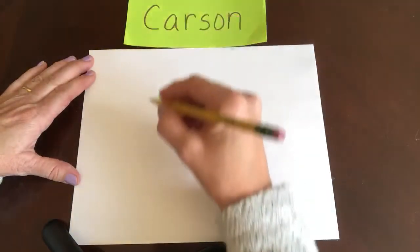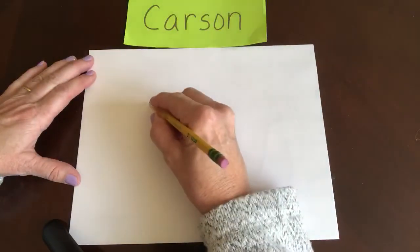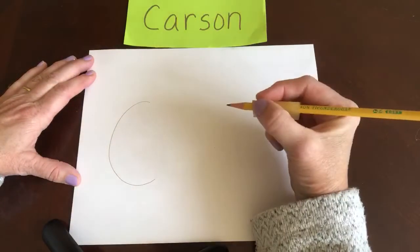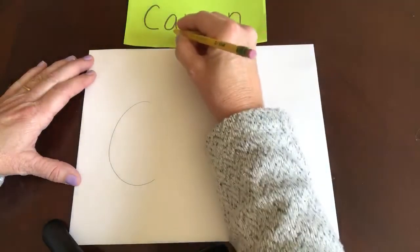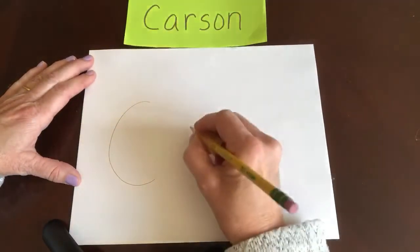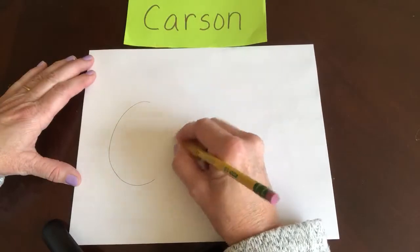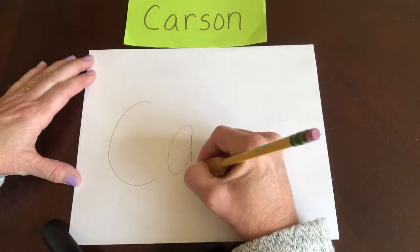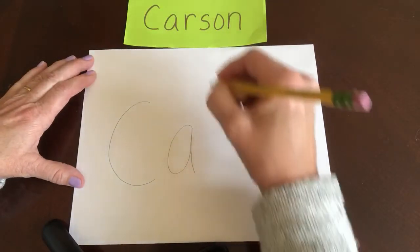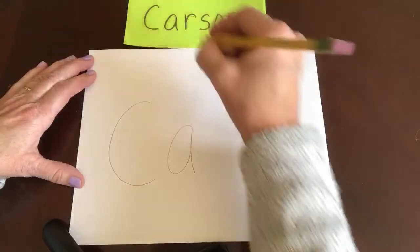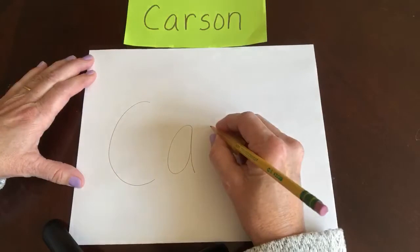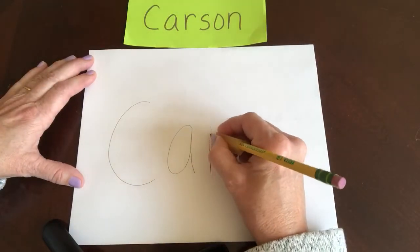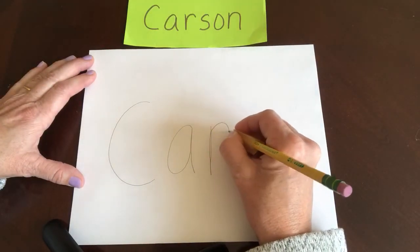Uppercase C — big curve. A — around and stop, lying down. R — little lying down, slide back up to the top with a curve.